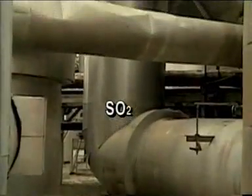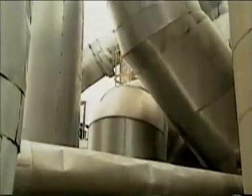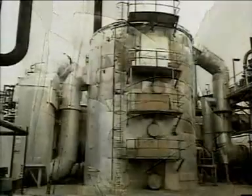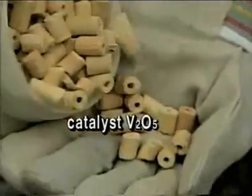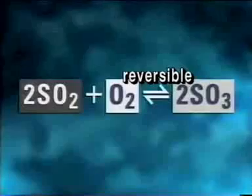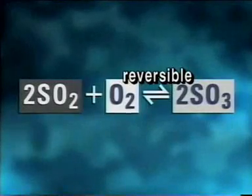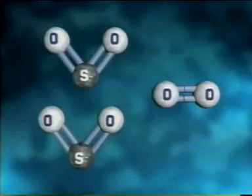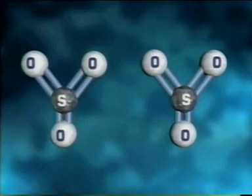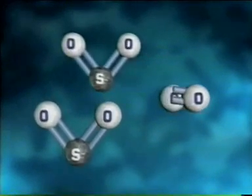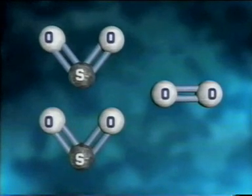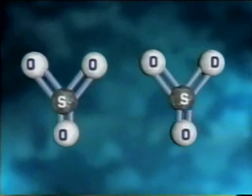As the sulfur dioxide leaves the furnace, it travels to the converter where it reacts with even more oxygen. A high temperature of 450 degrees Celsius and a catalyst of divanadium pentoxide speed up the reaction, converting sulfur dioxide and oxygen into sulfur trioxide. However, if the temperature rises too high, the sulfur trioxide tends to break back down into sulfur dioxide and oxygen — it's a reversible reaction that can go forwards or backwards depending on the temperature.